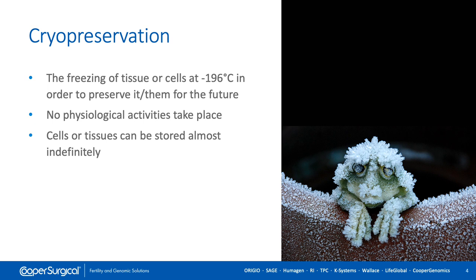Cryopreservation is not an artificial process and can be found in vivo as well. This is a picture of an Alaskan wood frog, which can tolerate the freezing of its blood and other tissues. Urea accumulates in its tissues in preparation for cold weather. In response, liver glycogen is converted in large quantities to glucose. Both urea and glucose act as cryoprotectants to limit ice formation and reduce osmotic shrinkage of cells.